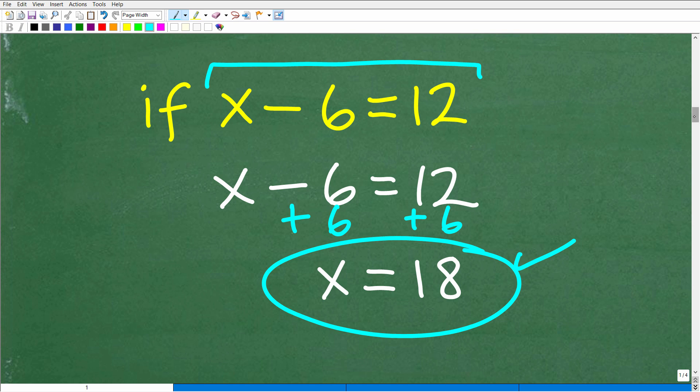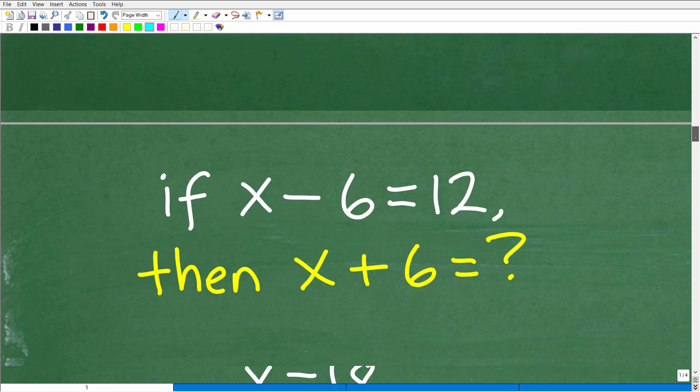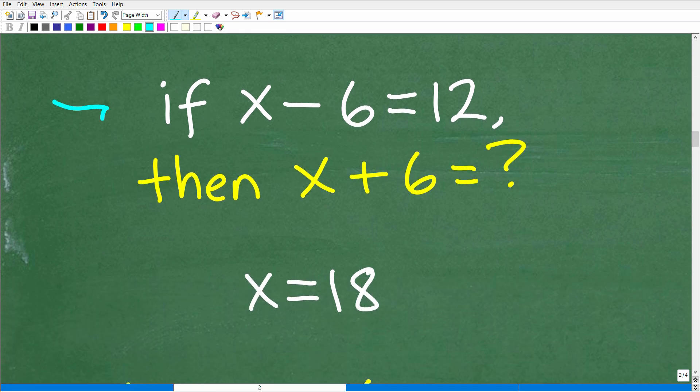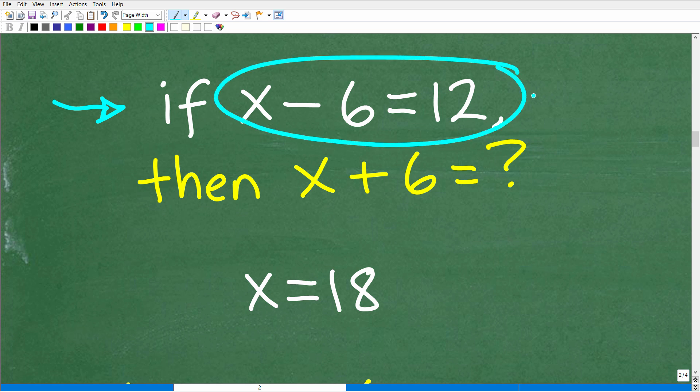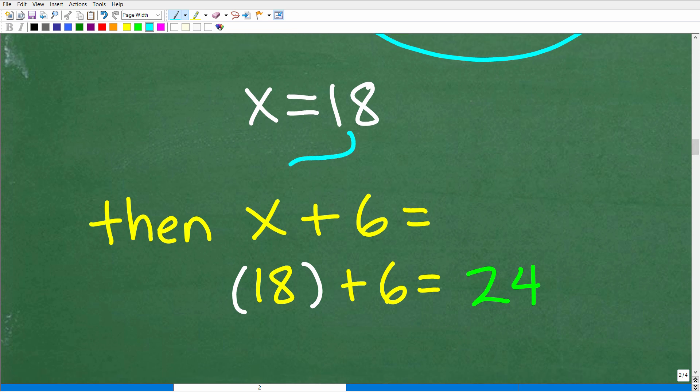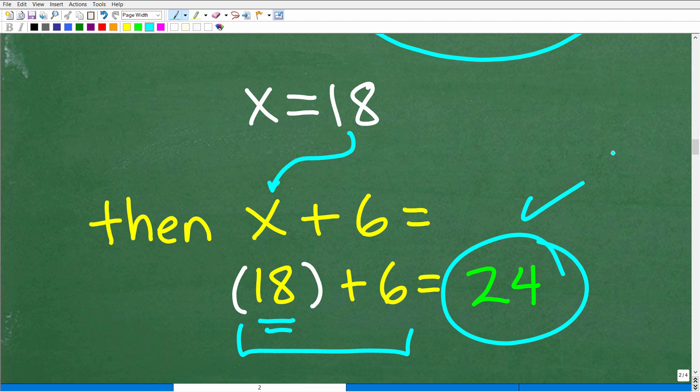All right, so what do we do with this answer now? Well, we're going to go back to the problem and we focused in on the if part of this problem, right? If X minus six is equal to 12. Well, this is just kind of a fancy way to tell me that X is equal to 18. Then X plus six is equal to what? Well, now that I know that X is equal to 18, I could simply replace this X with 18 and do this simple addition. So that's what we're going to do now. All right, so X is equal to 18. Again, we're going to replace this X with 18. So 18 plus six. And if my arithmetic is good to go, 18 plus six is 24.